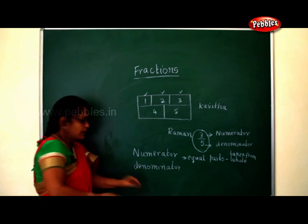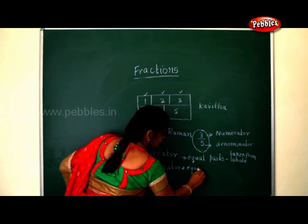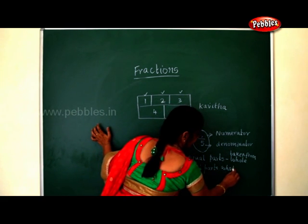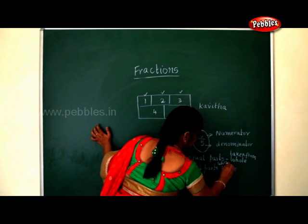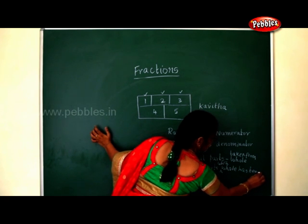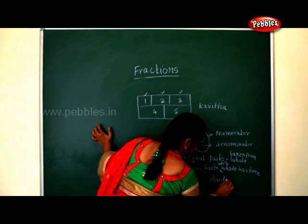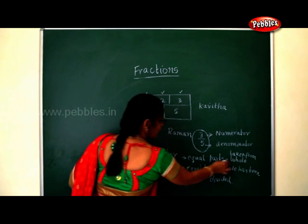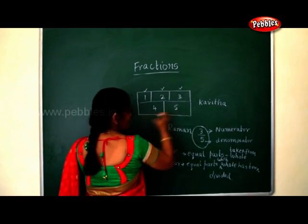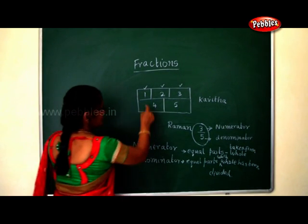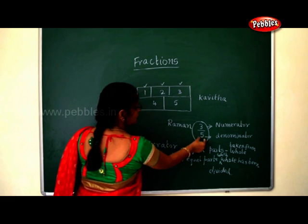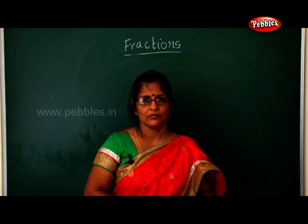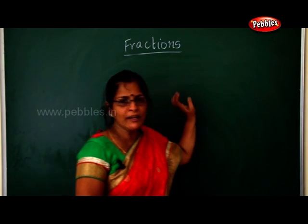Denominator is the equal parts into which the whole has been divided. In our example, five is the number of parts the whole has been divided into, so five is the denominator. And the three parts taken from the whole — three is the numerator. Children, I think you must have understood numerator and denominator.